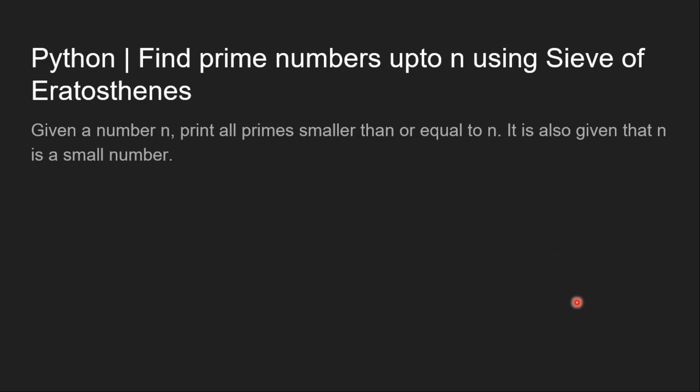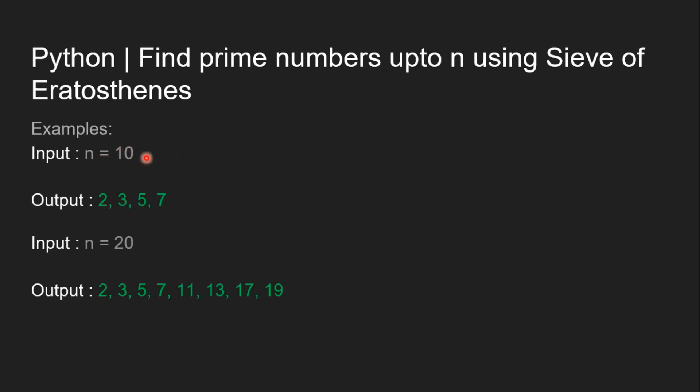Now let's clear with an example. n is equal to 10, the output should be 2, 3, 5, 7, as these are the prime numbers between 1 to 10.